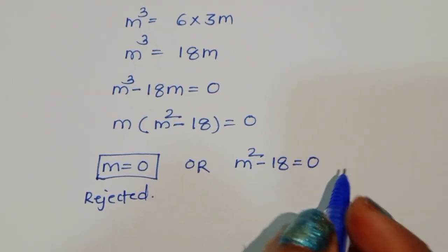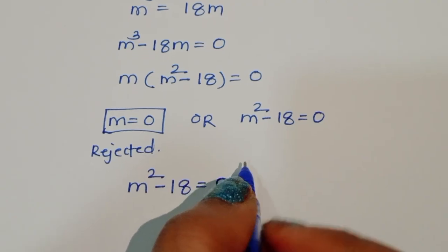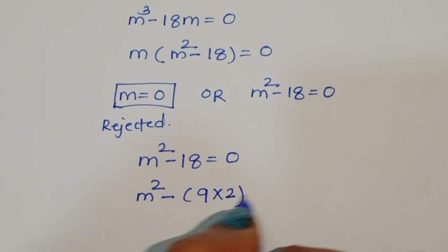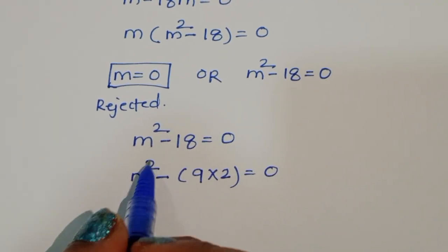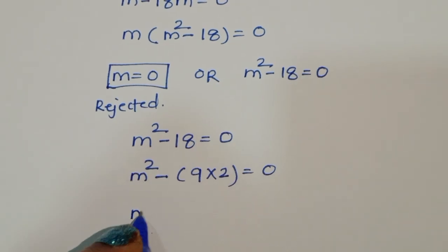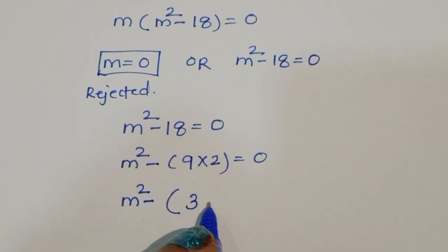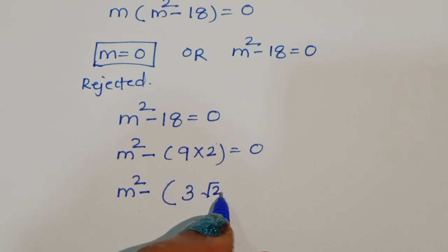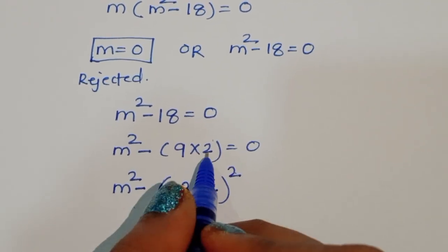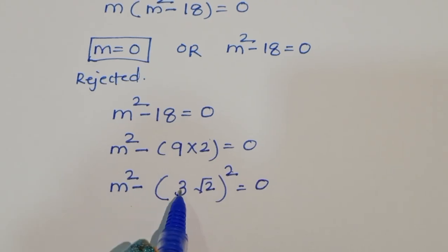So we work with m squared minus 18 equals 0. We can rewrite 18 as 9 times 2, giving m squared minus 9 times 2 equals 0. Writing 9 as 3 squared and 2 as (√2) squared, this becomes the form a squared minus b squared, where a is m and b is 3√2.